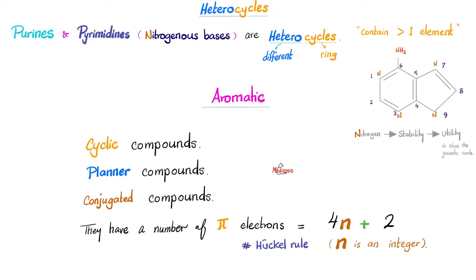Purines and pyrimidines are heterocycles. Why? Hetero means different. I have nitrogen, I have hydrogen, I have carbon, some of them have oxygen, some of these bases have oxygen, etc. So they are heterocycles. Different elements in the ring structure. If you contain more than one element, we call you hetero. If you have a ring, we call you a cycle.